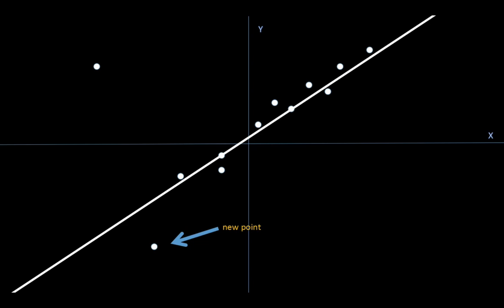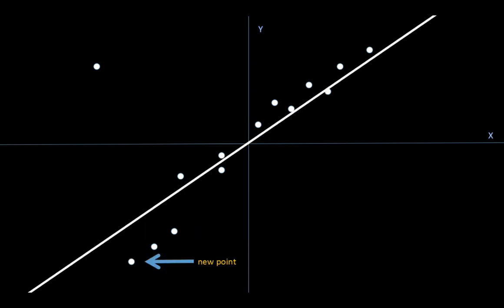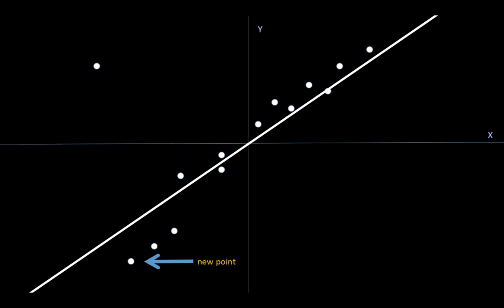Suppose a new point comes. The line is going to move a little bit — not much more. Only one point is going to be fit. So the new points are going to fit, so you can fit them a little bit. Now the problem is: how is the line going to fit?